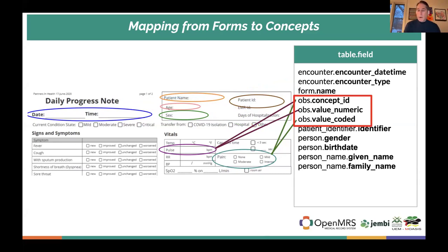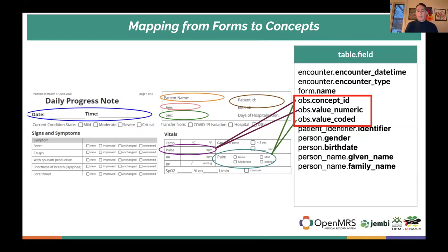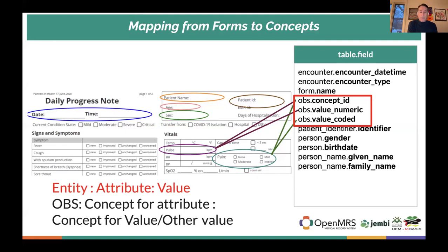What we're going to focus on today is mostly the OBS table, because the concept ID and its various columns associated with capturing observations about the patient is really where OpenMRS shines and is different from most other electronic medical records. Most other systems have a separate field in the database — a different column — for everything they're collecting, like pulse or respiratory rate. People know the meaning of that column based on its name, which is tied to the database and could differ depending on how people set up their system.